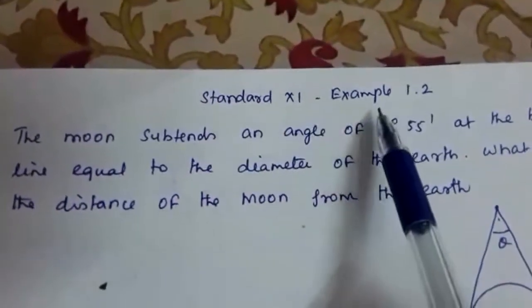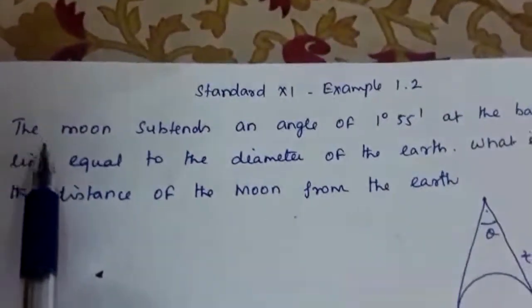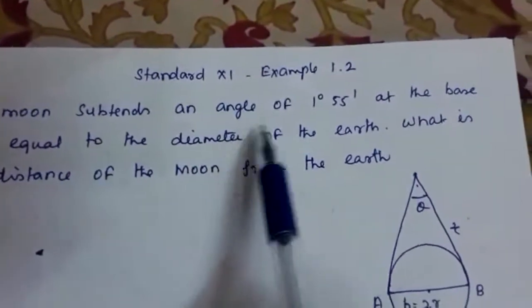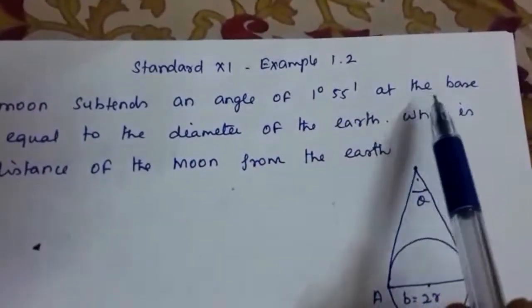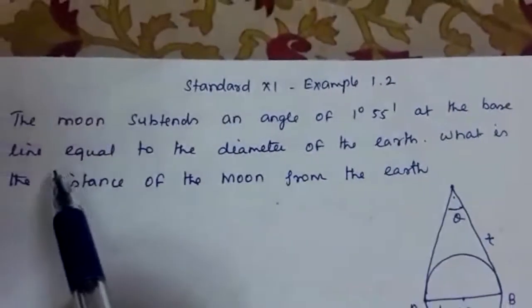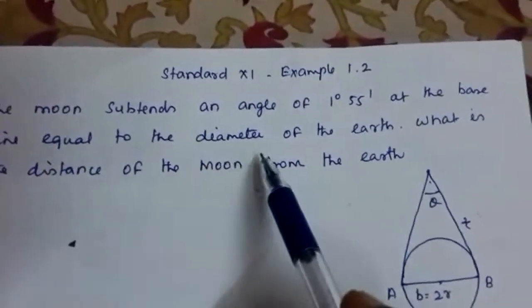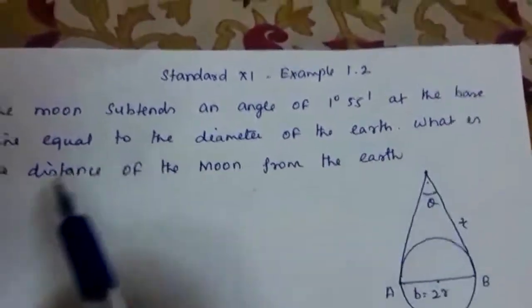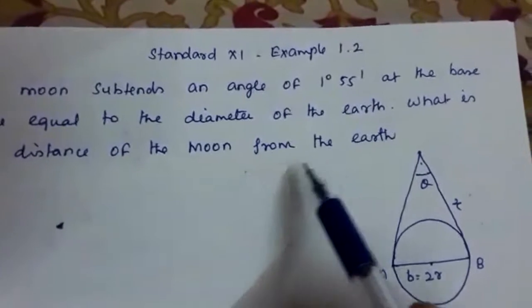Standard 11, example 1.2. The moon subtends an angle of 1 degree 55 minutes at the baseline equal to the diameter of the earth. What is the distance of the moon from the earth?